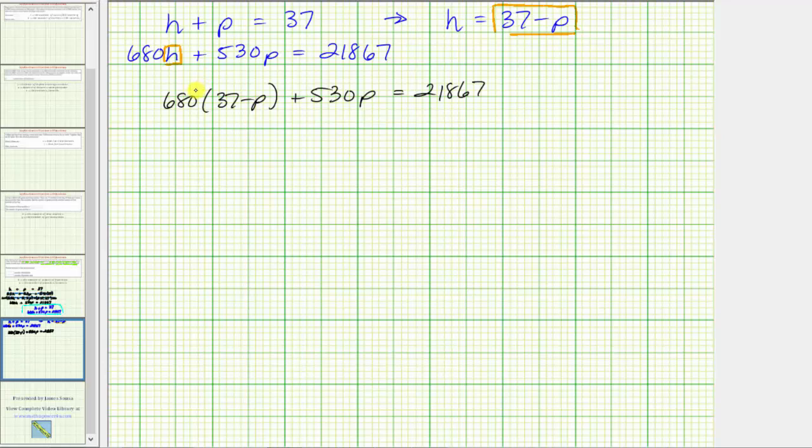For the next step, let's put the parentheses here. 680 times 37 is equal to 25,160, and we have minus 680p plus 530p equals 21,867.